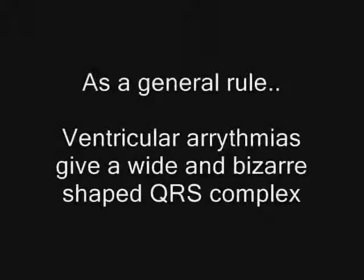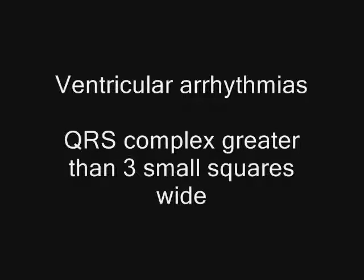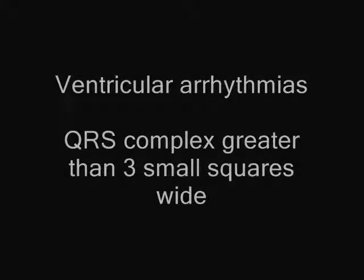Whereas a ventricular arrhythmia, or one where there are ventricular conduction problems, the QRS complex becomes widened and bizarre in shape. At its widest point — you guessed it — it's wider than three small squares.